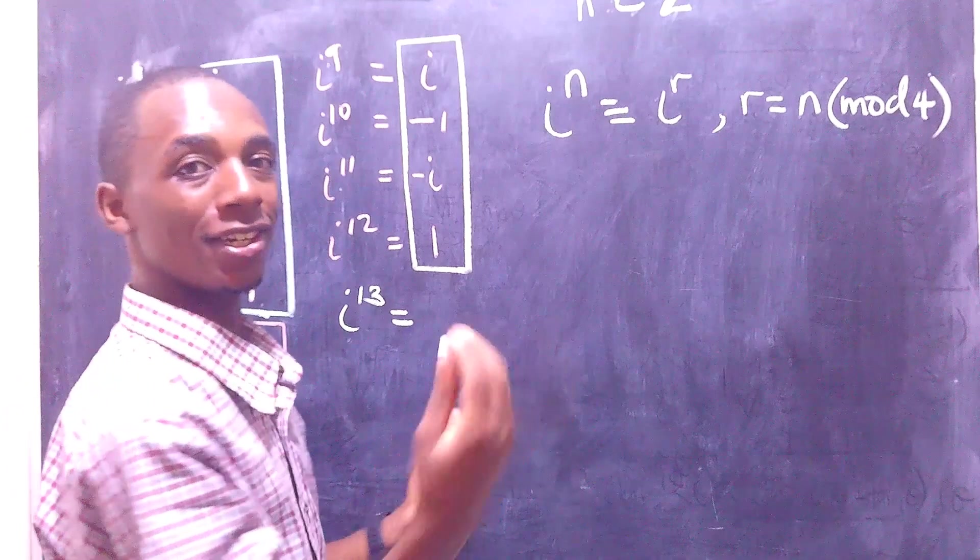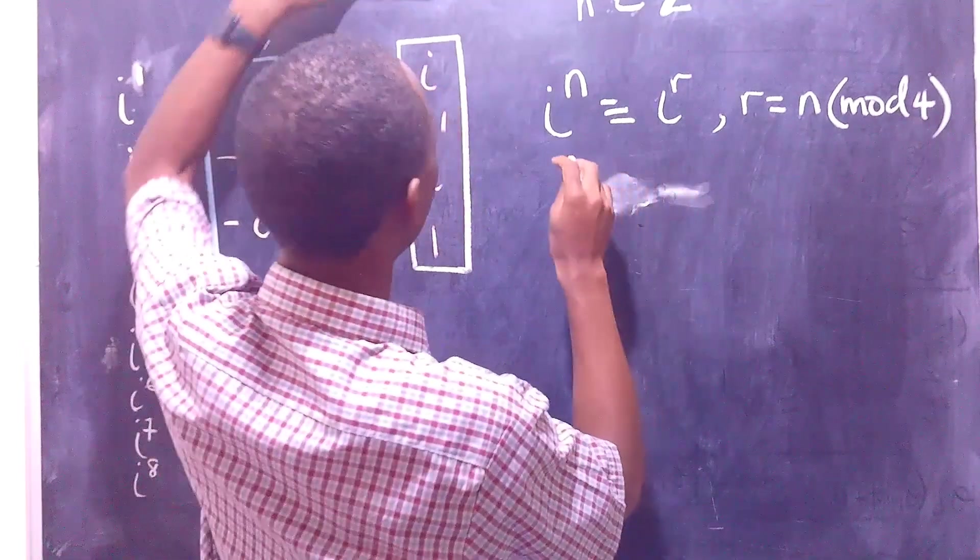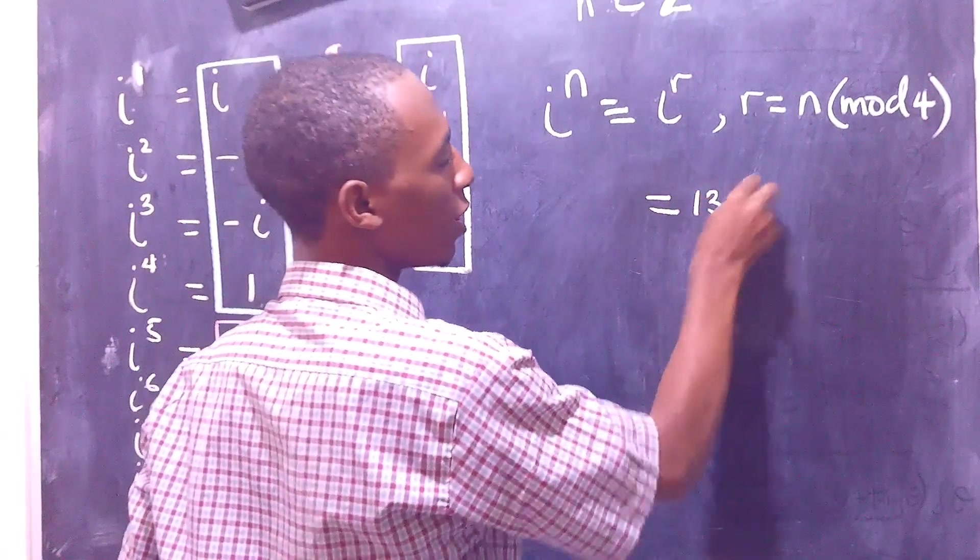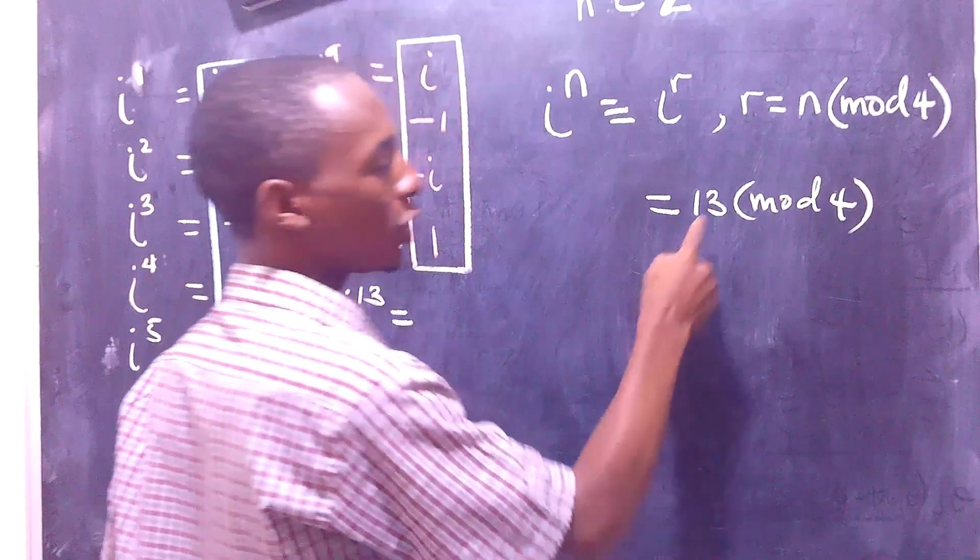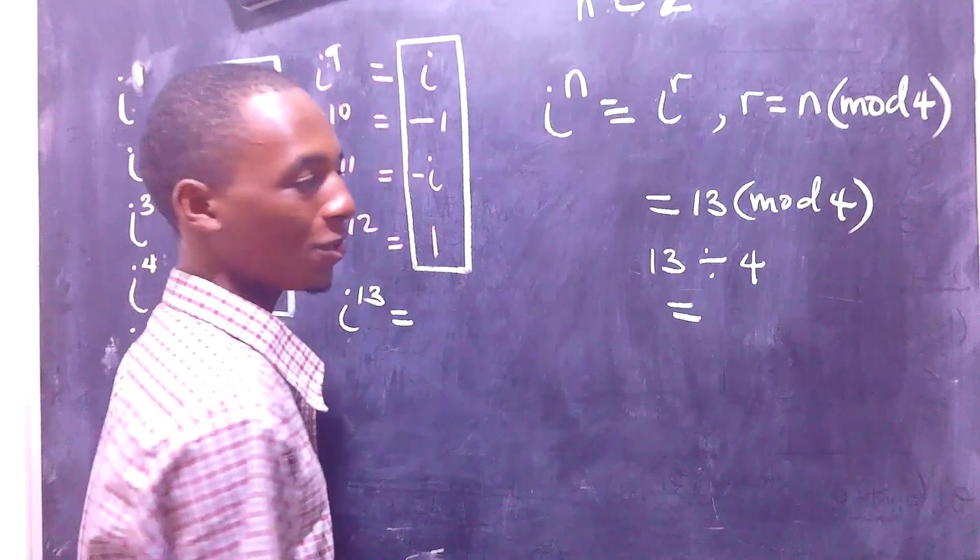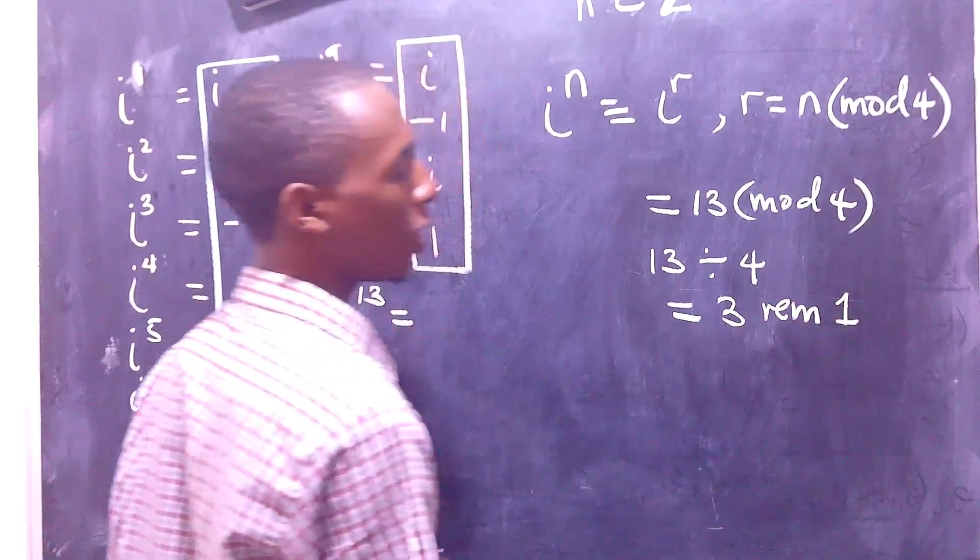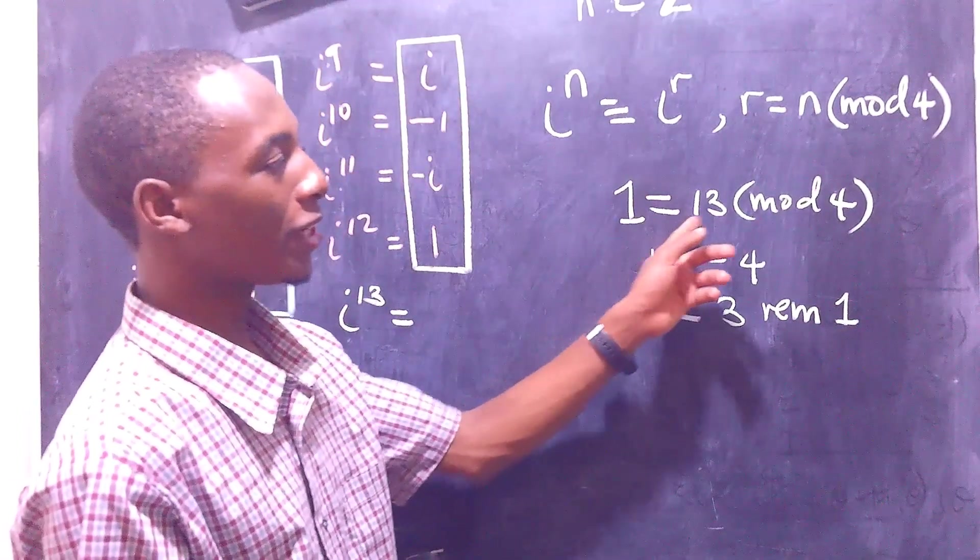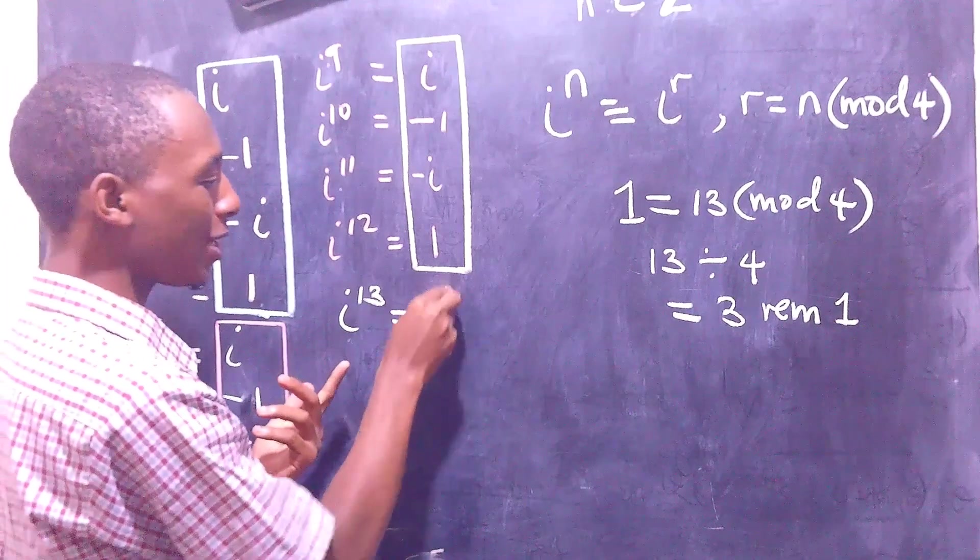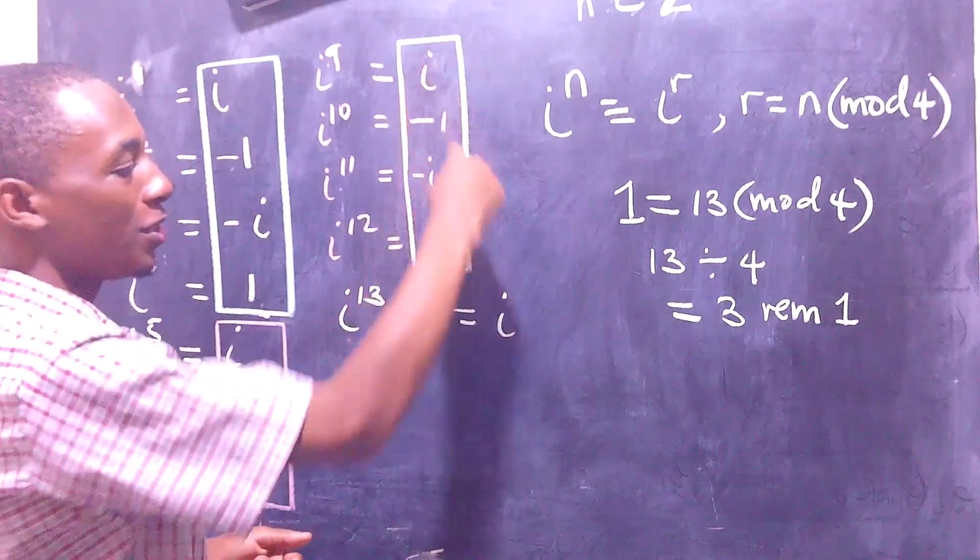So, let's write 13 in mod 4. I'm going to get 13, I divide that by 4, and that's going to be 3 with a remainder of 1. So 13 written in mod 4 is actually a 1. So instead of writing i to the power 13, this is the same as i to the power 1, which as we already know is just i, and of course the pattern will just keep repeating.